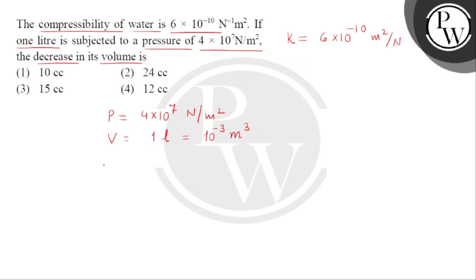We need to find the decrease in the volume of water after application of pressure. For this, we'll check the relationship that bulk modulus is the reciprocal of compressibility, and bulk modulus is defined as the ratio of volume stress to volume strain.